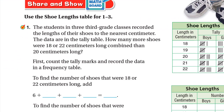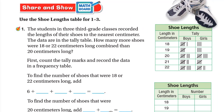Now for Share and Show. Use the shoe length table for questions one through three. Students in three third-grade classes recorded the length of their shoes to the nearest centimeter. The data are in the tally table. Question: how many more shoes were 18 or 22 centimeters long combined than 20 centimeters long? First, count the tally marks and record the data in a frequency table.